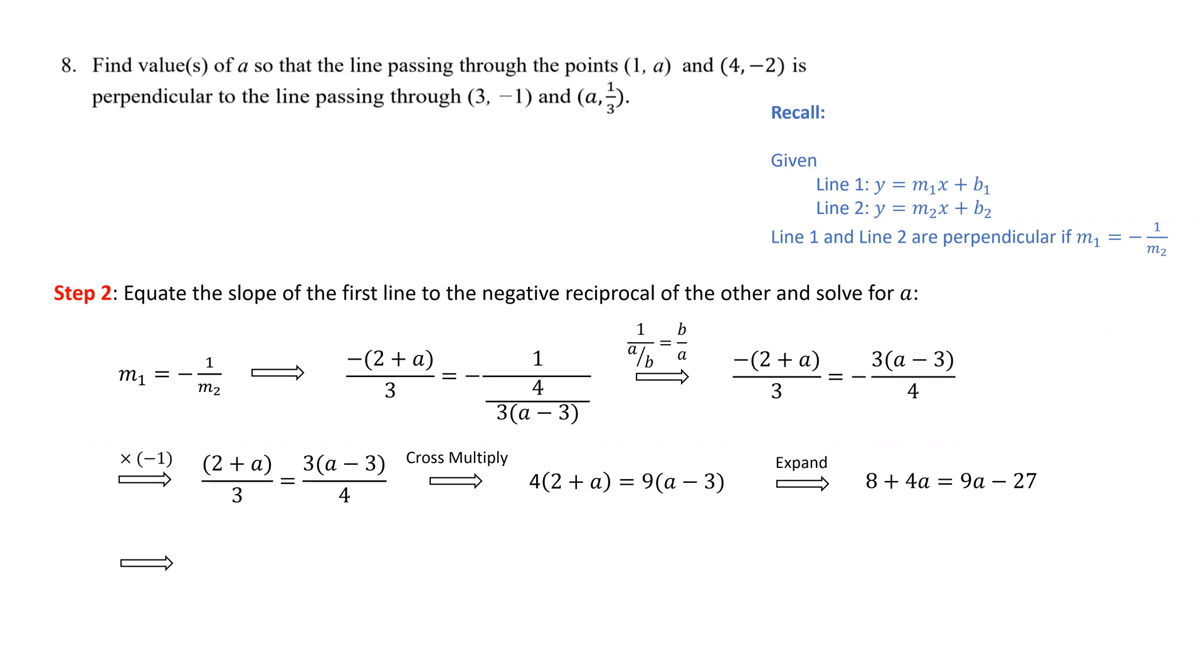We group like terms on the same side, moving the a terms to the left and numbers to the right. We combine like terms and get -5a = -35. Finally, we divide both sides by -5 to solve for a. So a equals 7.